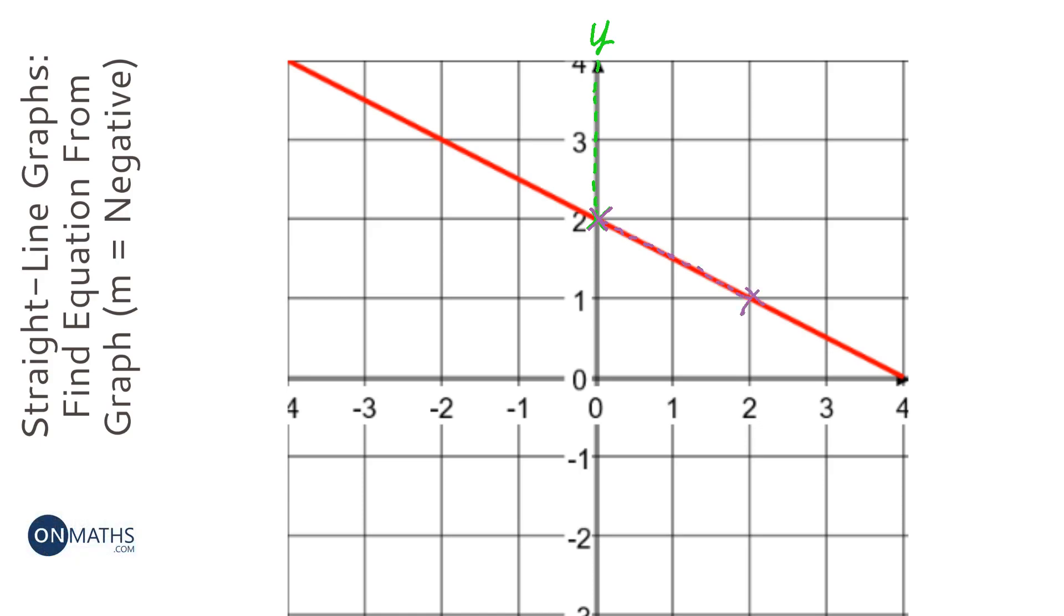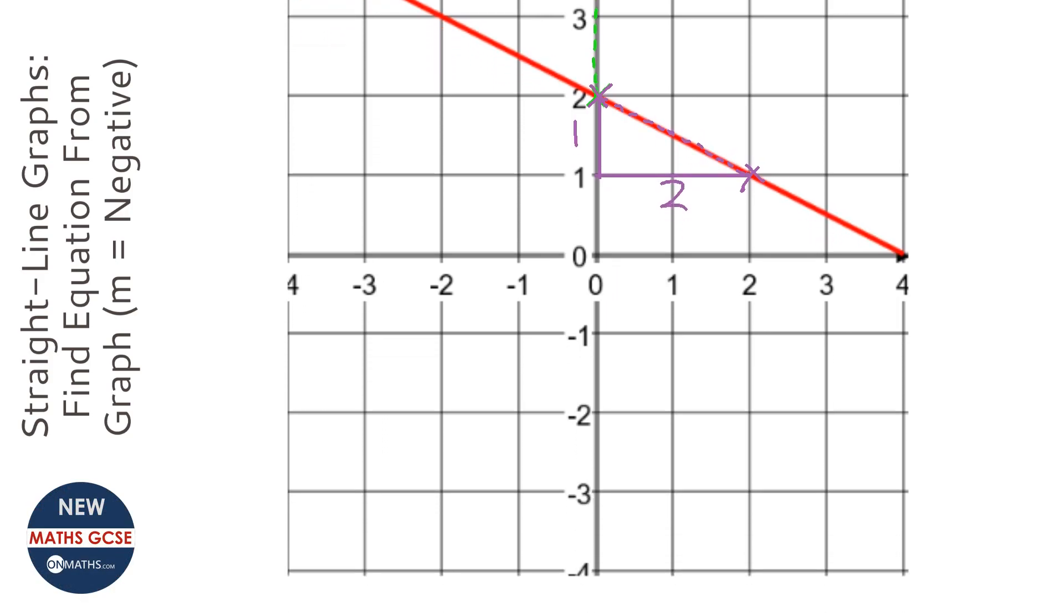Then you draw yourself a little triangle, so you go down then across, and you find out how much has y changed. How much have you had to go down? It's one square. How much did I have to go across? Well it's two squares.